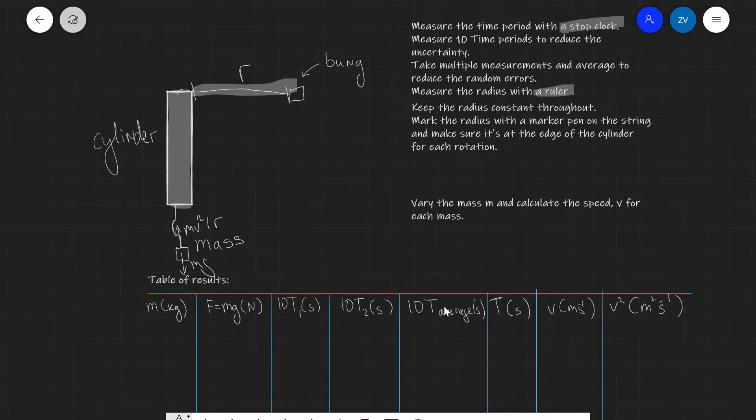After we find the average of those values we're going to divide that number by ten and only this will be our time period.